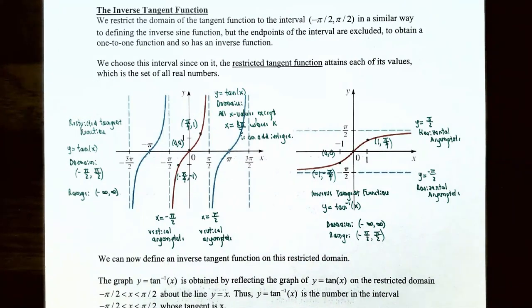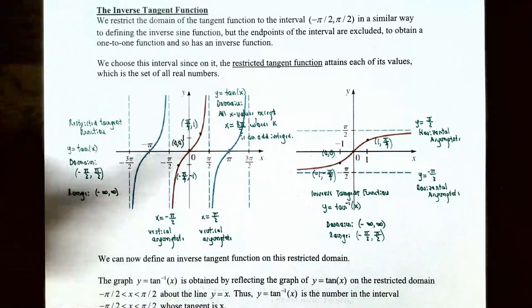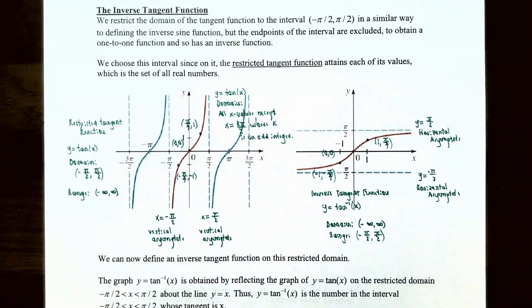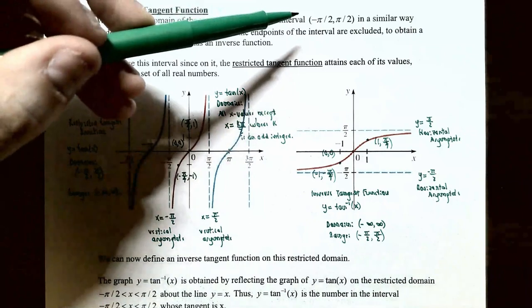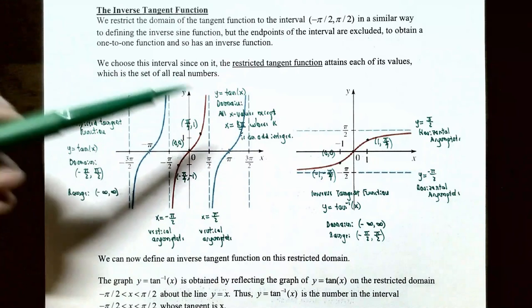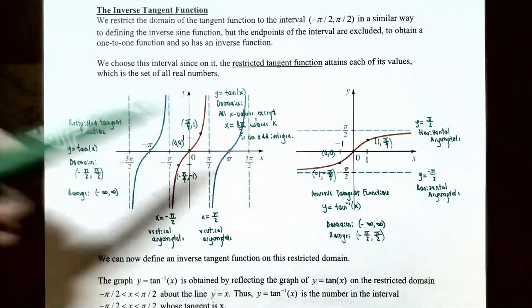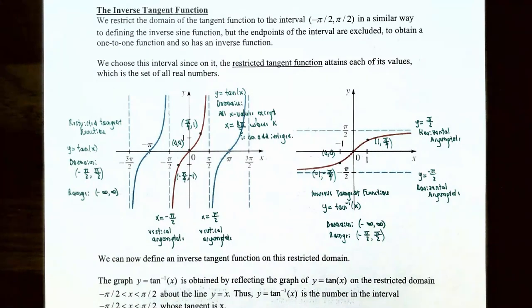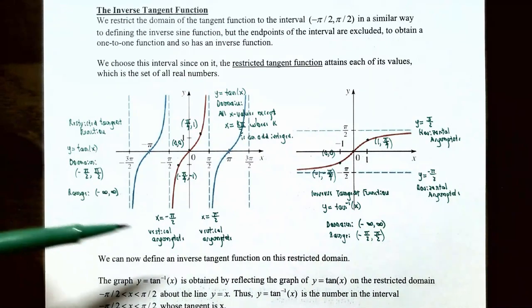If we restrict the domain of the tangent function to the interval from negative pi over 2 to pi over 2, not including the endpoints, we can define the inverse tangent function. We exclude the endpoints because those are actually vertical asymptotes for the tangent function. The tangent function is not one-to-one on its entire domain, so we need to restrict it to between negative pi over 2 and pi over 2 so that it becomes one-to-one and has an inverse.